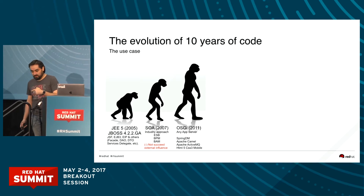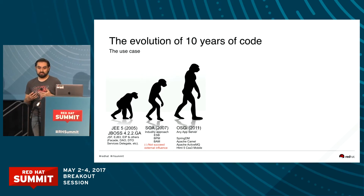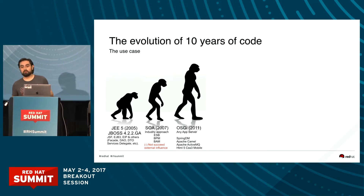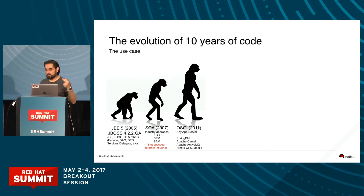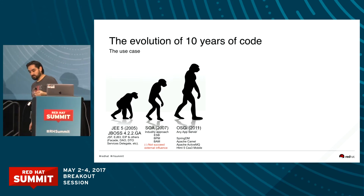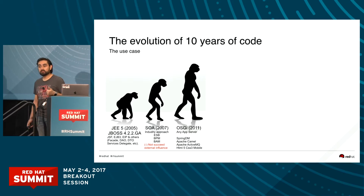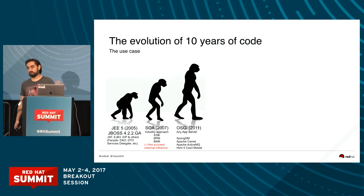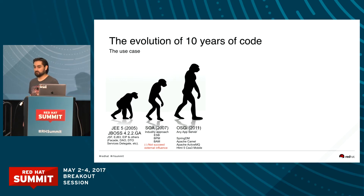Then, as the project started to become complex, we tried to modularize everything. We moved forward and used OSGI as a modularization strategy — we used Spring DM at the time. We introduced Apache Camel, which is a great integration library. We started using Apache ActiveMQ. And at this time we moved forward from JavaServer Faces and started creating the front end on HTML5 and CSS3, and started creating mobile apps for each device.